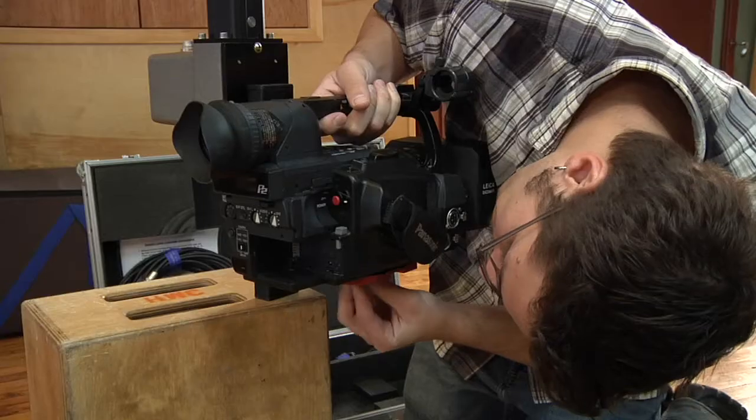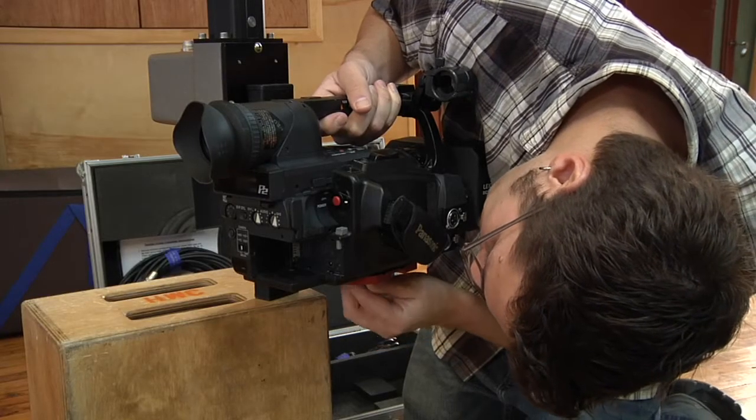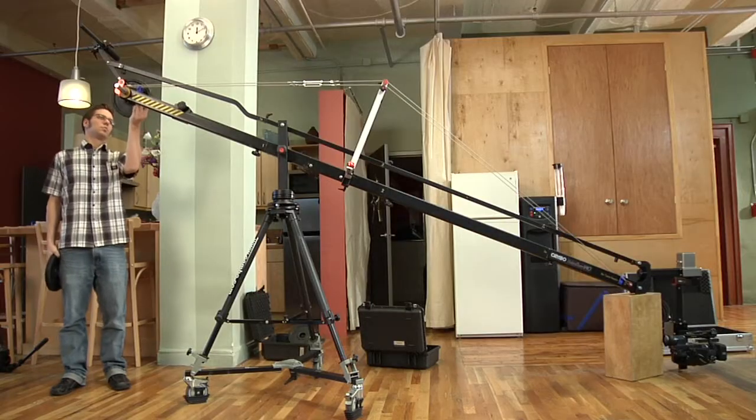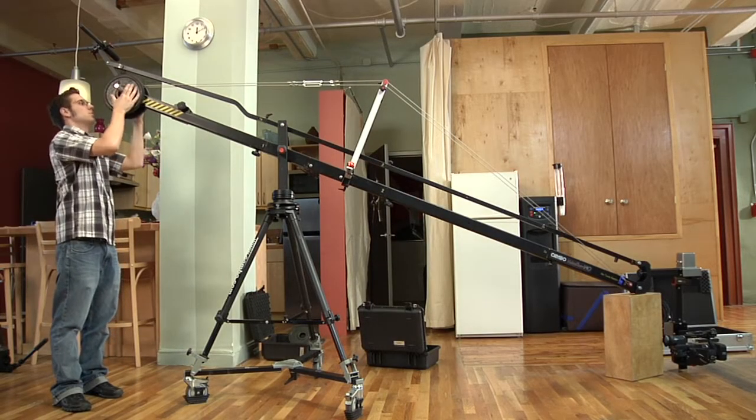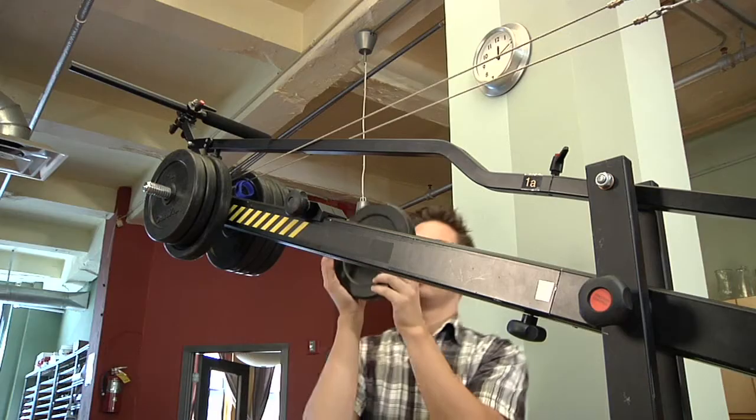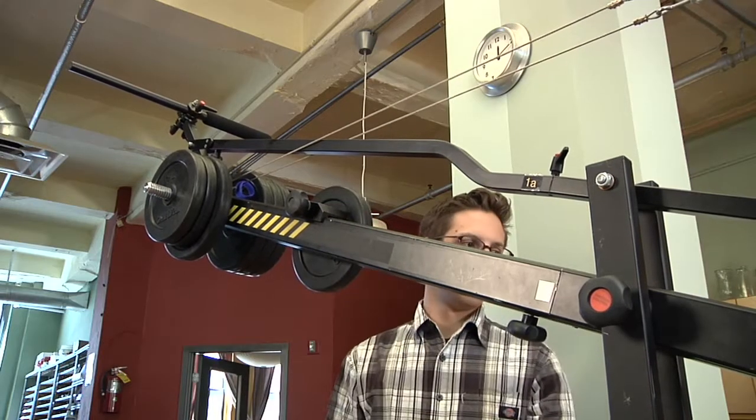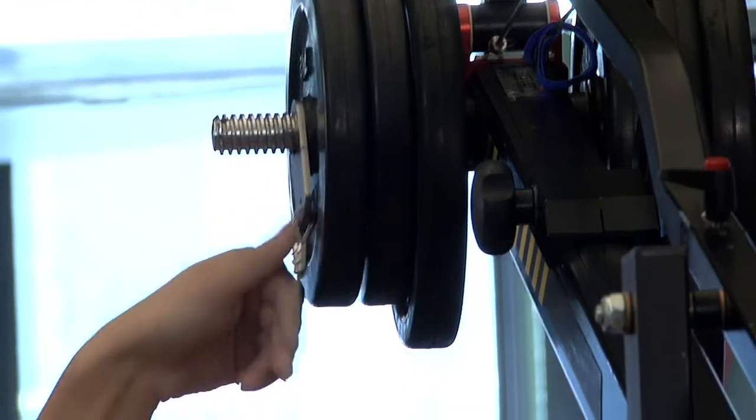Now attach the camera to the head. The crane, at its maximum length, can comfortably hold 20 pounds. Keep in mind that the motorized head itself weighs about 10 pounds, which means the heaviest camera one can use at this length is 10 pounds.